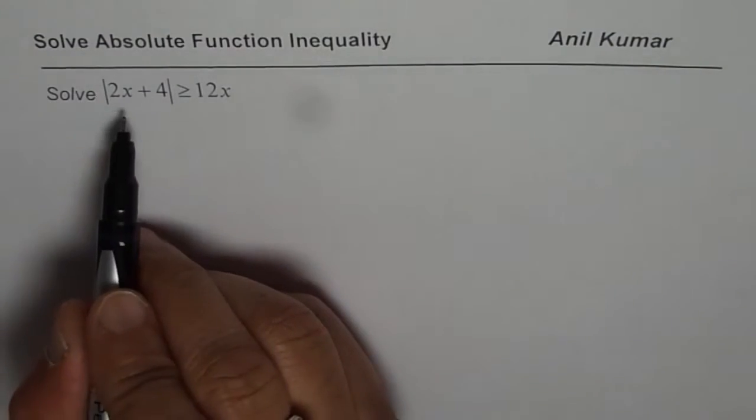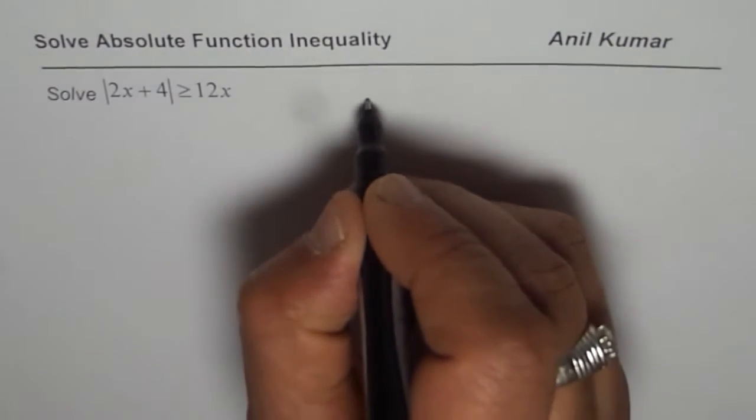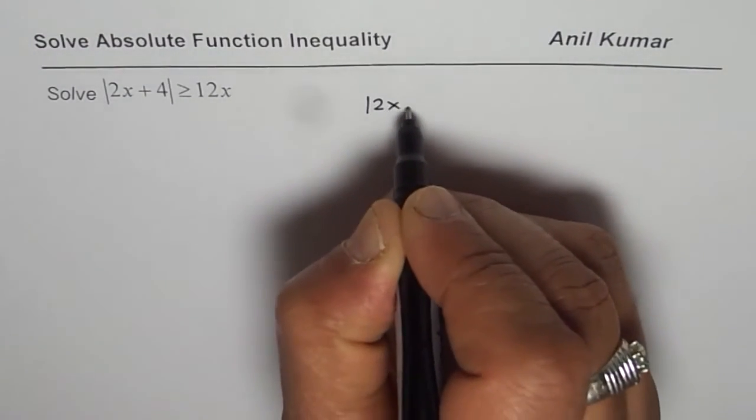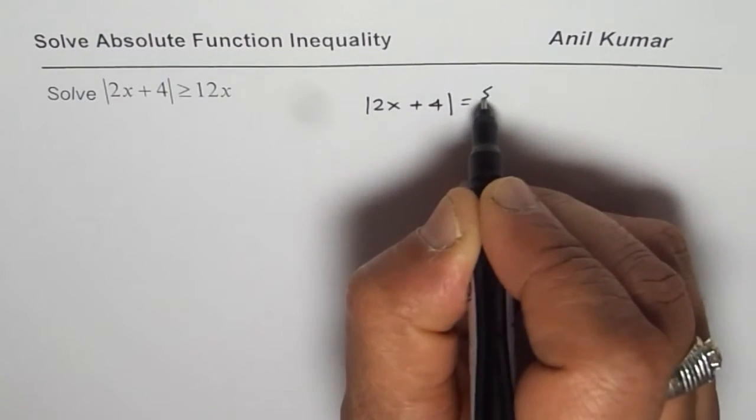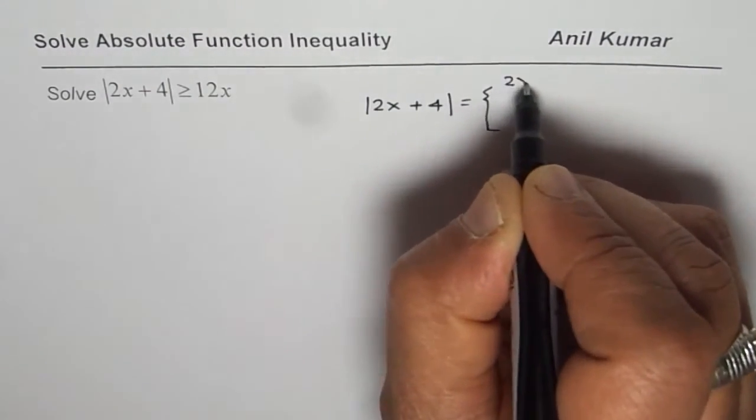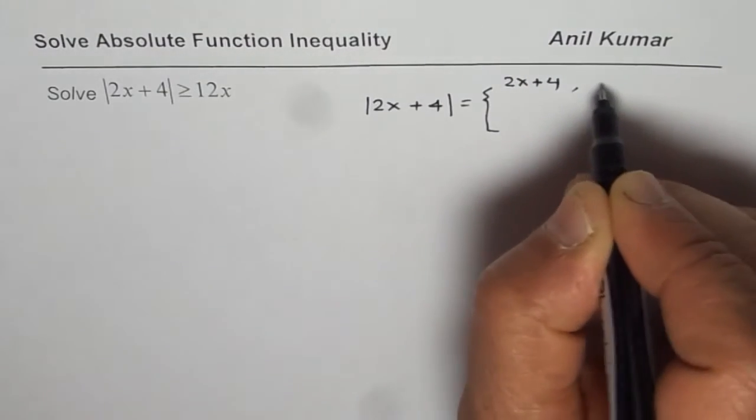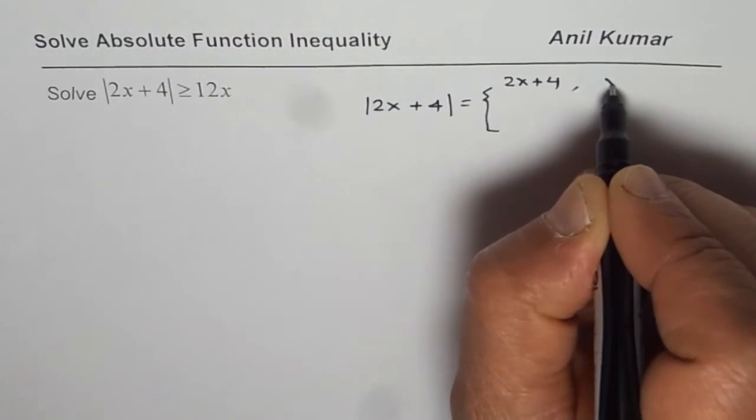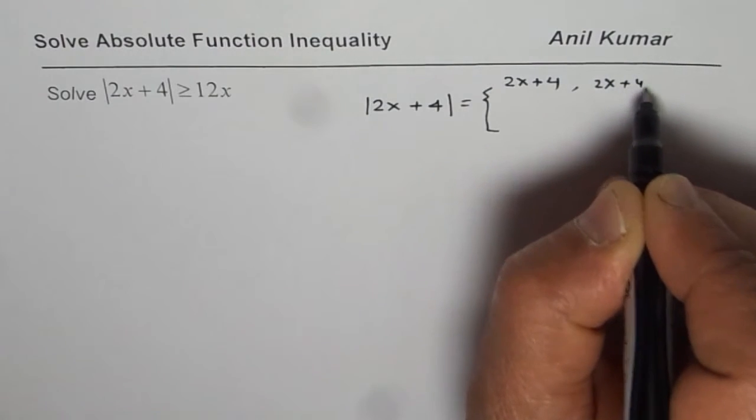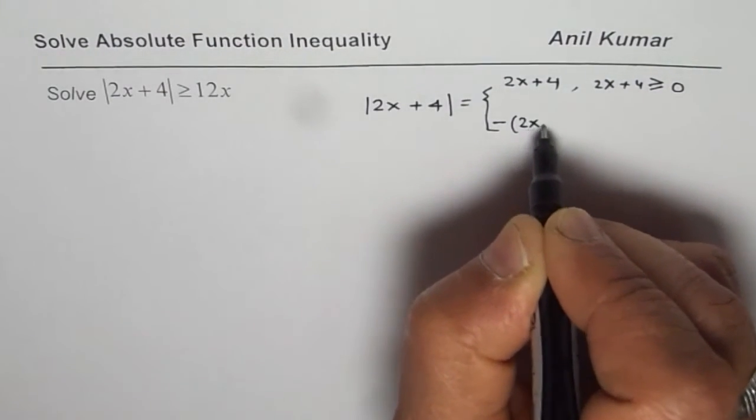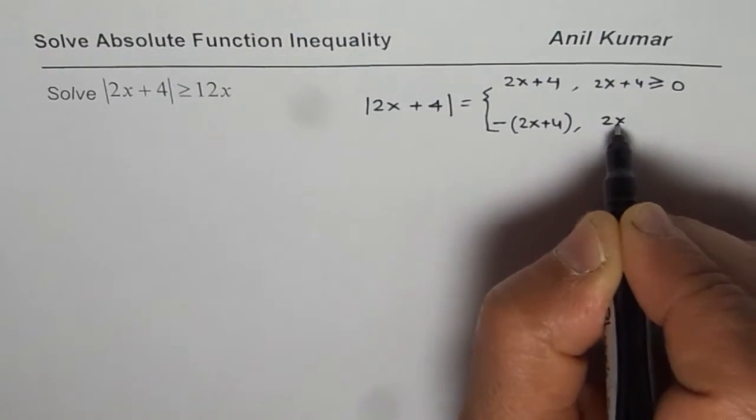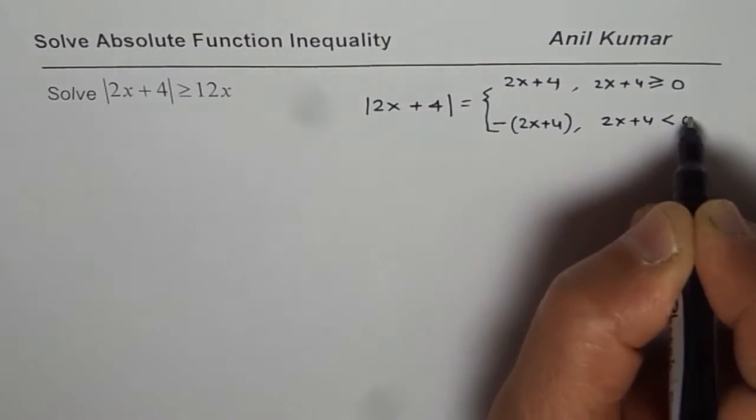First step is to define the absolute function, write it as a piecewise function. So we have |2x + 4| which is equal to 2x + 4 when 2x + 4 is greater than or equal to 0, and is negative of 2x + 4 when 2x + 4 is less than 0.